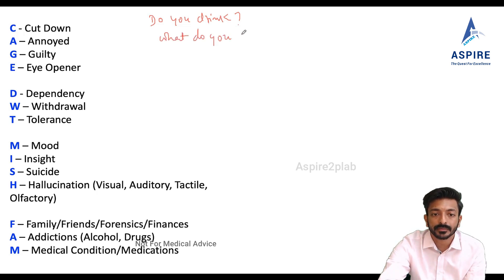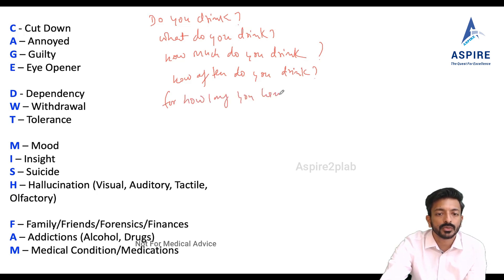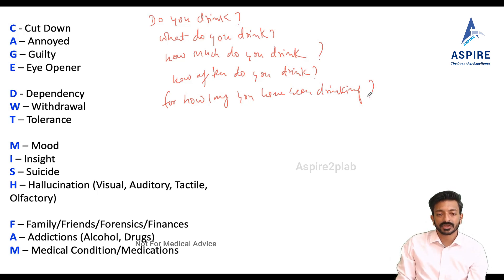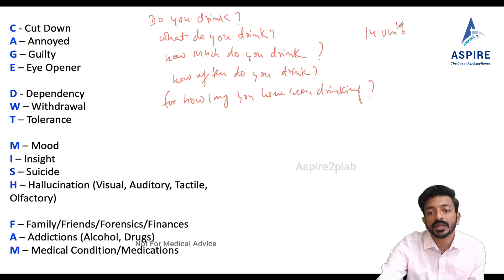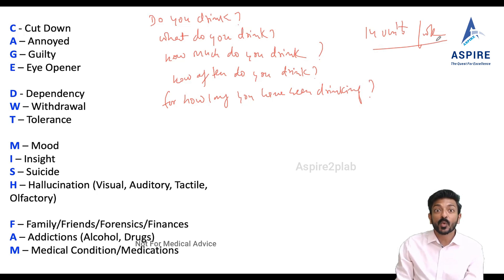If the patient is drinking, you need to ask: what do you drink, how much do you drink, how often do you drink, and for how long have you been drinking. In the UK, 14 units per week is acceptable with two alcohol-free days. However, binge drinking is not fine — for example, if a patient takes all 14 units in one day and drinks nothing for the next six days, that doesn't make sense. The 14 units should be spread across the week with at least two alcohol-free days.